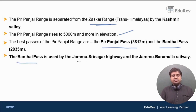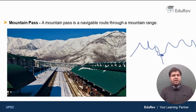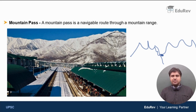The Banihal Pass is used by the very important Jammu-Srinagar Highway, and also the Jammu-Baramulla Railway. This is an image of Banihal Railway Station, which is very beautiful and surrounded by snow-capped mountains. All the mountains you can see here are the mountains of the Pir Panjal range.